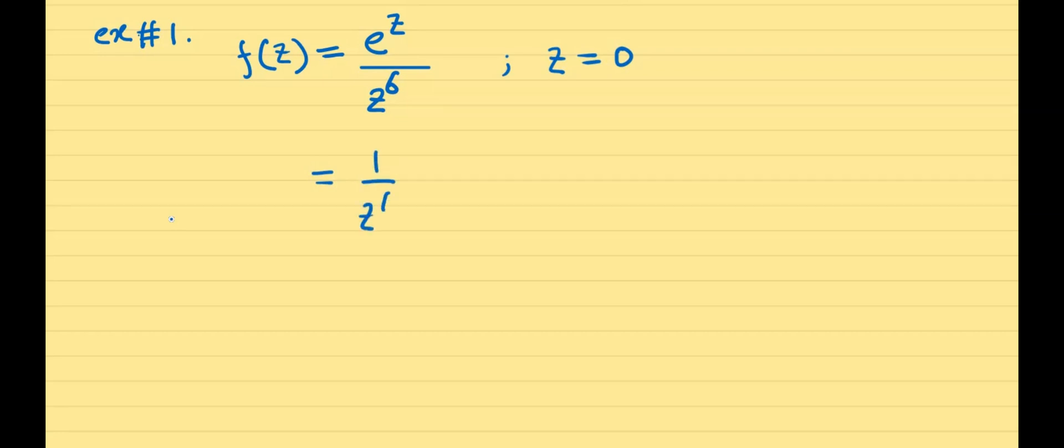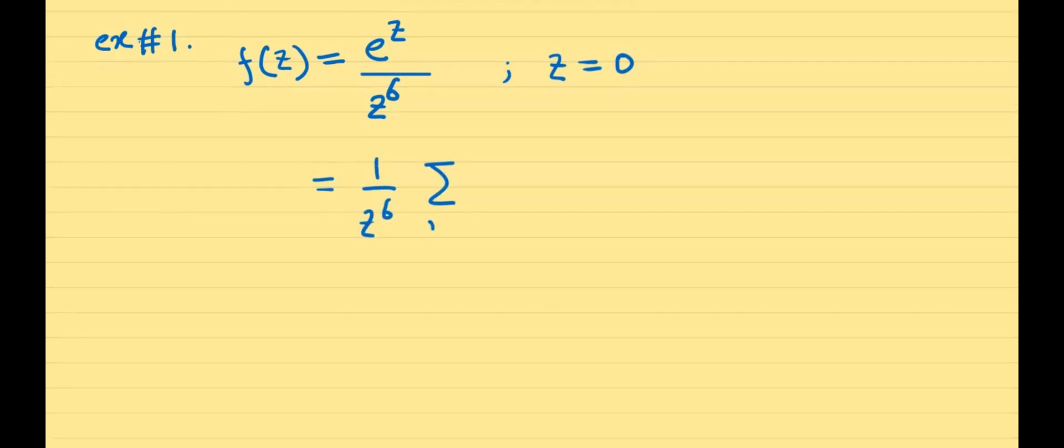We have 1 over z to the power 6, sum over n starting from 0 to infinity, 1 over n factorial, z to the power n. So if we expand this, we find this is going to be 1 over z to the power 6, and we have the usual Taylor series for e to the power z, which is given by 1 plus z plus z squared divided by 2 factorial, plus z cubed divided by 3 factorial, and so on and so forth.